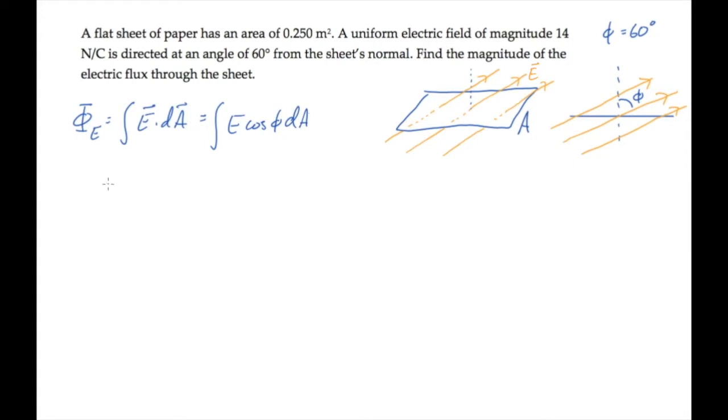Because the electric field is constant and the angle phi is constant, this just gives us E times A times cosine of the angle phi.